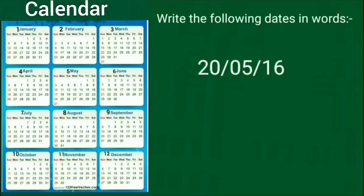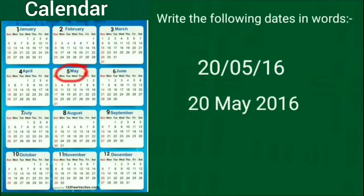Next is 20-5-16. In this, date is 20, month is 5th, and year is 16. Students, look at the calendar — which is the 5th month of a year? Yes, the 5th month of a year is May. So, we write it as 20 May 2016.